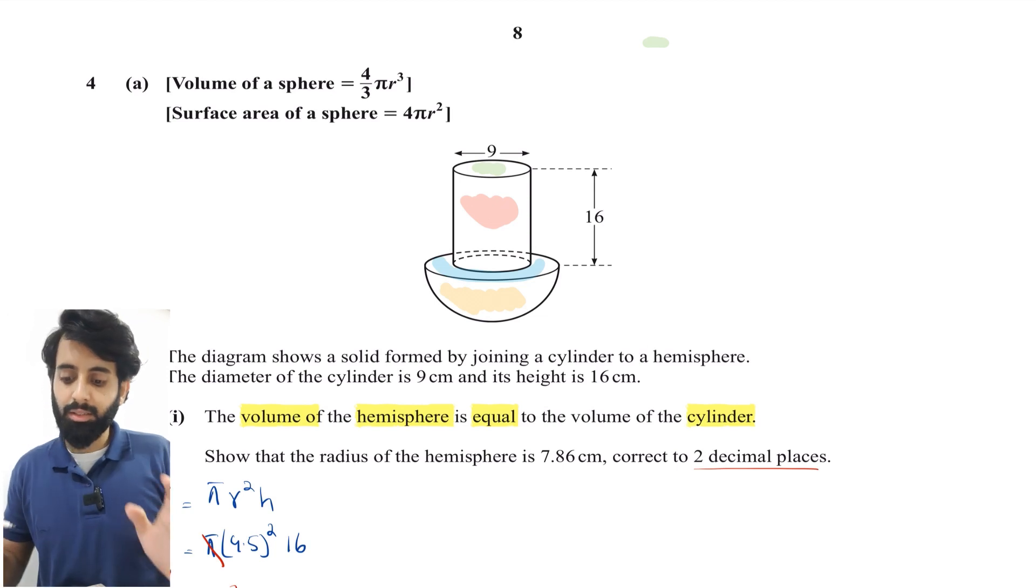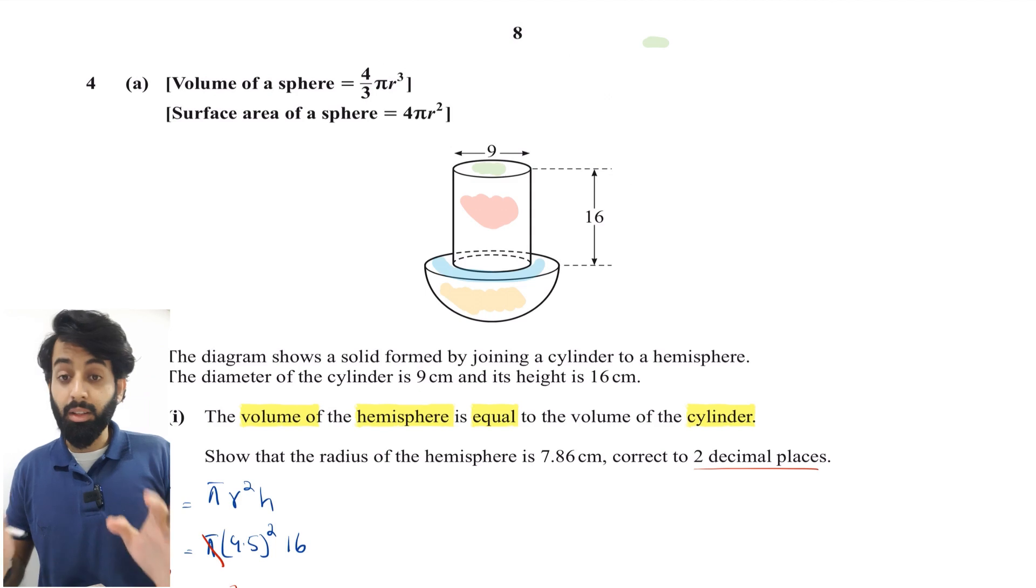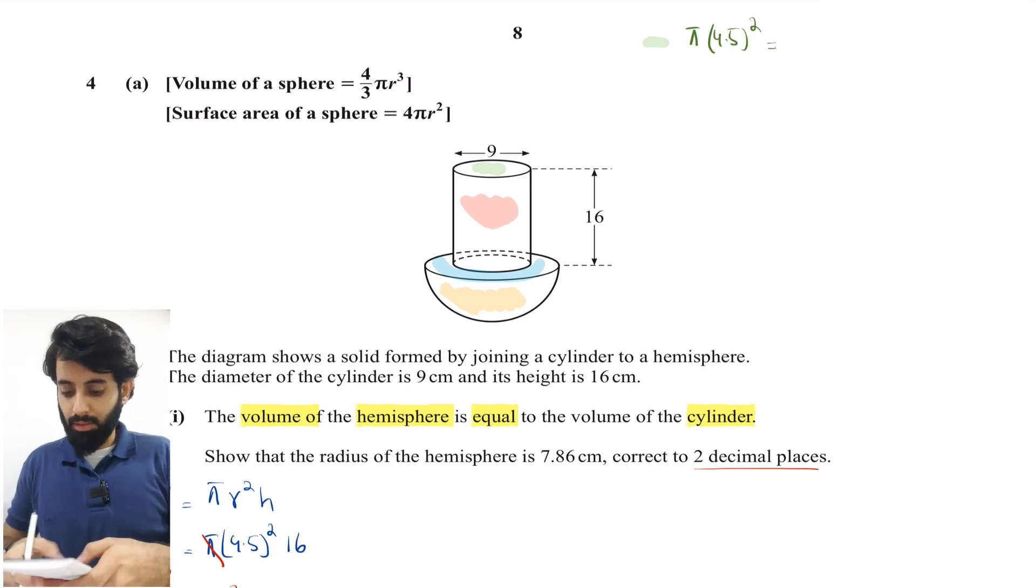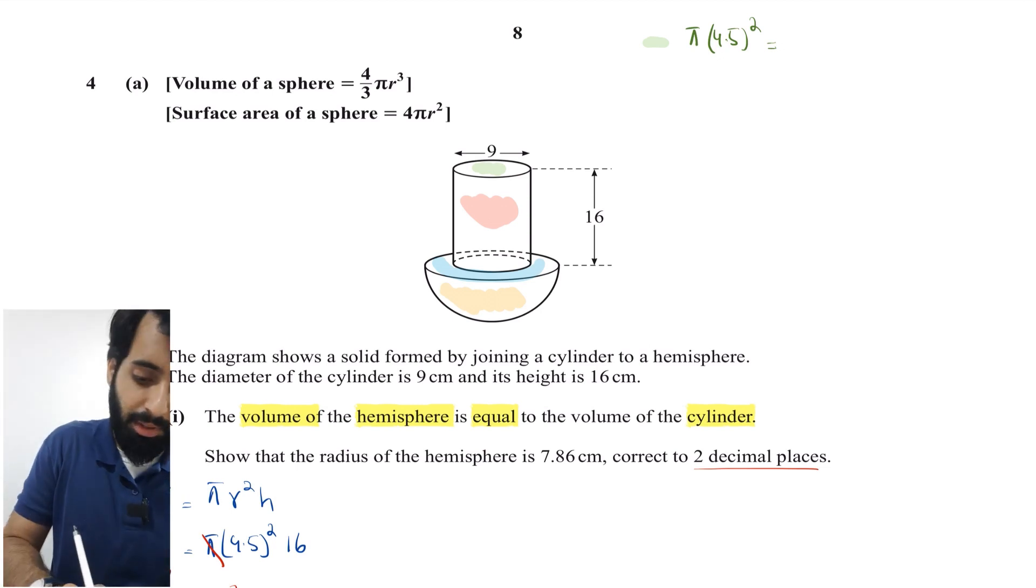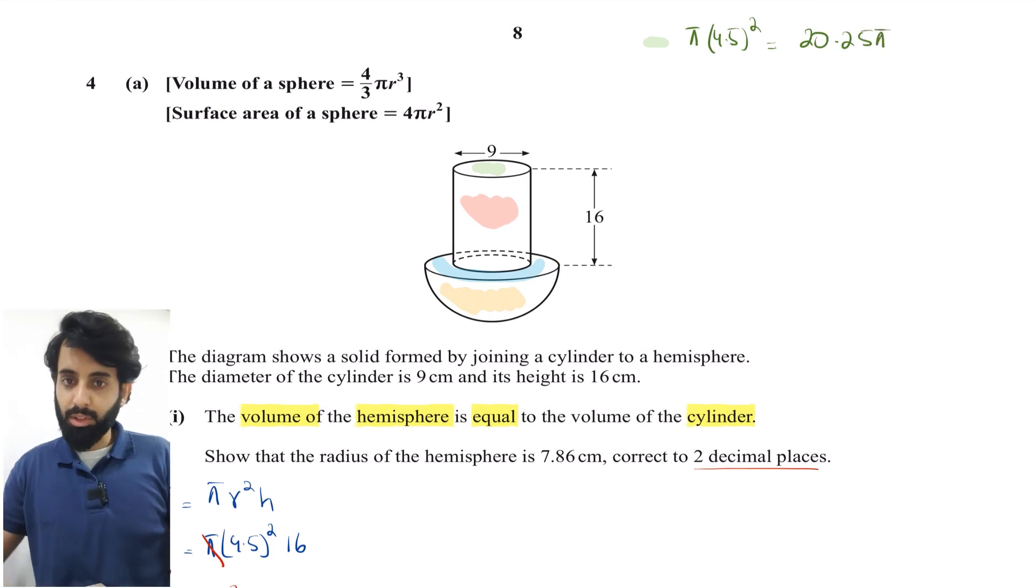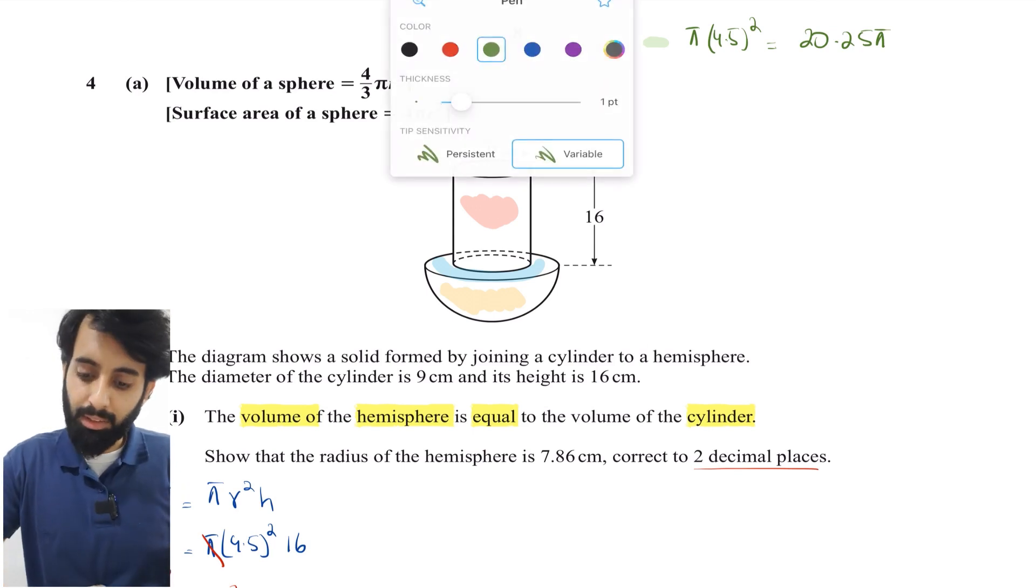Here's the green surface. This green surface is nothing but a circle with radius 4.5. I'm going to calculate its area: π(4.5)². Let's work this out: 4.5 squared is 20.25, so 20.25π. We'll put this on the side for now.